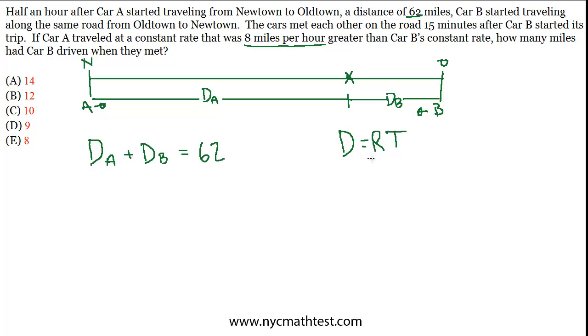From there we can say something about the time. Right away we can say the time of B is only 15 minutes, or a quarter of an hour. The reason I'm using hours is because the rates are in miles per hour, so I don't want to mix units. Otherwise we'll get some weird answer that won't make sense. A leaves half an hour earlier, so the time of A must be three quarters of an hour, or 45 minutes. So we actually know their times already. Their rates we only know relatively. We know that B has some rate, and the rate of A is 8 miles an hour faster than the rate of B. So we know that their rates have this specific relationship.